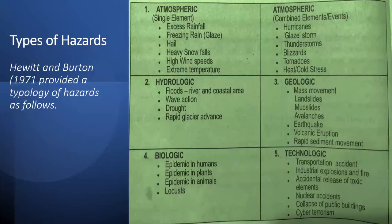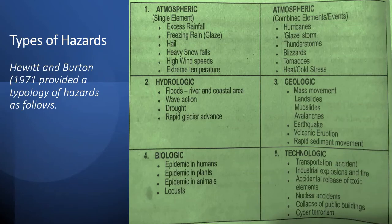Types of hazards: Atmospheric — either single element or combined elements or events; Hydrologic — which is water-based; Geologic — geological in nature, or events in the crust of Earth; Biologic — relating to living things; and Technologic or human-made hazards.